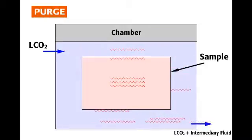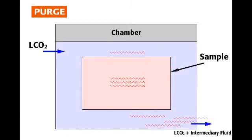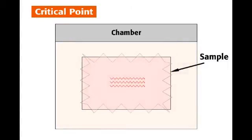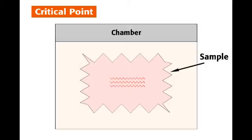During the purge mode, liquid carbon dioxide is pumped into the cooled chamber while the intermediary fluid and liquid carbon dioxide exit through the vent port. The problem with thicker samples is that the intermediary fluid can be exchanged out of the chamber fluid, but can still remain inside of the sample. When the chamber rises above the critical temperature and pressure, the sample structure will collapse due to the internal intermediary fluid still present inside of it, and an incomplete drying will occur.